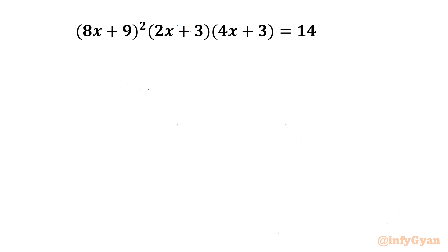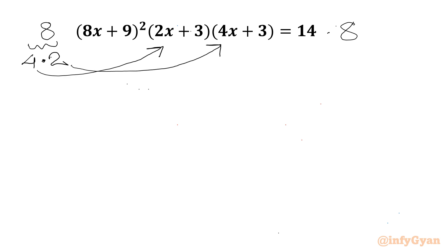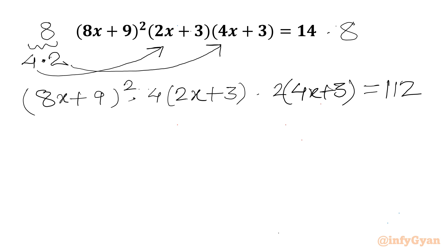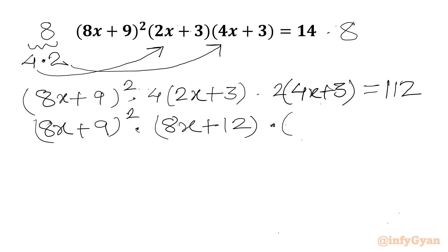Let's get started by multiplying both sides by 8. Now this 8 we can split as 4 times 2. This 4 I will multiply to bracket 2, and this 2 I will multiply to bracket 3. So I can write (8x + 9)² times (4)(2x + 3) times (2)(4x + 3), which gives us (8x + 9)² times (8x + 12) times (8x + 6) equal to 112.